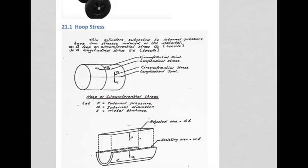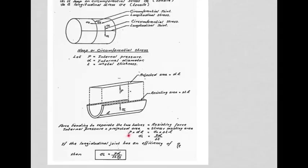Hoop or circumferential stress is best understood by looking at half of the vessel. We look at the projected area of that cylinder, which is ultimately a rectangle, and consider the pressure acting on that rectangular shape. We know that pressure is force over area, so force equals pressure times area — pressure multiplied by the projected area dl equals the resisting force.